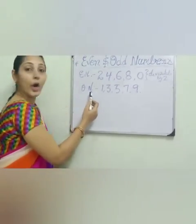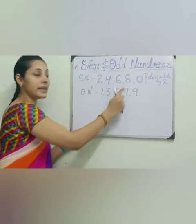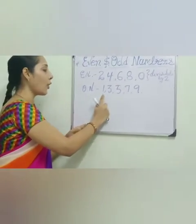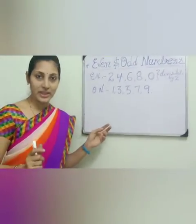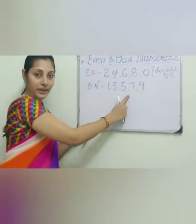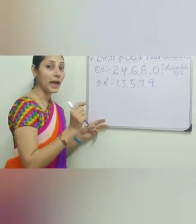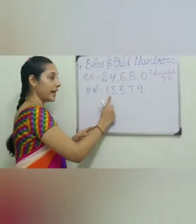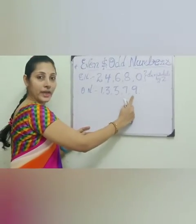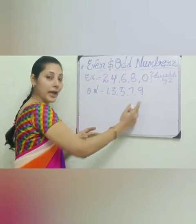Now we will go for odd numbers. Other than these numbers are called odd numbers. The ones place digits are 1, 3, 5, 7, 9. Okay. Understood?